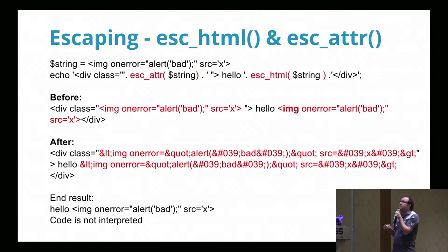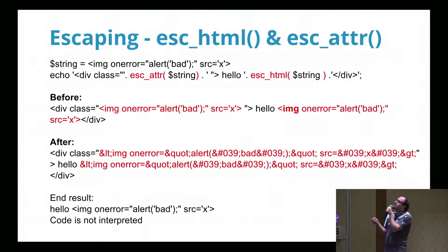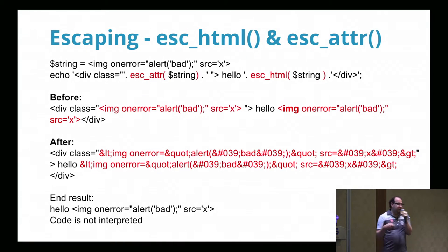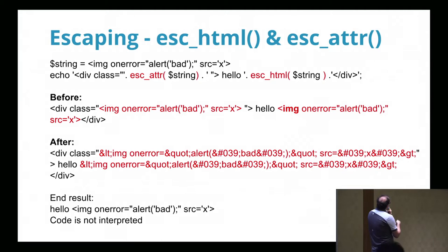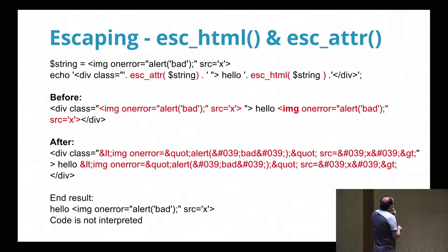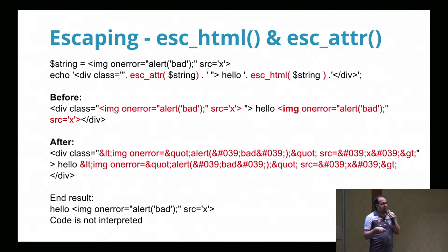When should you use esc_html and when should you use esc_attr? Instead of echoing the random string that you got from the user, you echo it inside esc_attr or esc_html. Before, the image tag was going to be interpreted — whereas after, it's going to be safely encoded, so it's not going to be run as code by the browser. It's going to literally show those characters on the site, but it won't be live JavaScript.